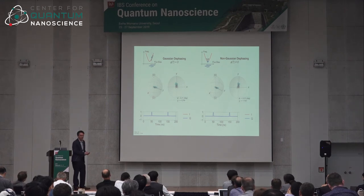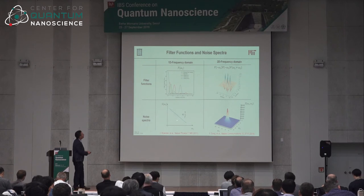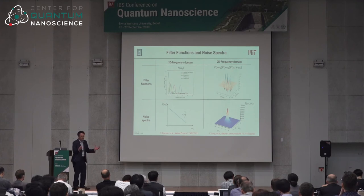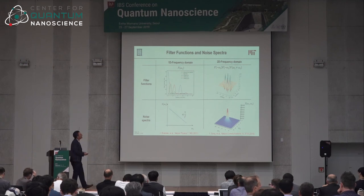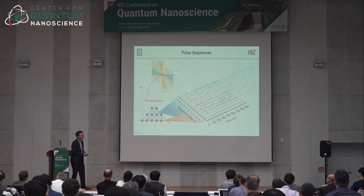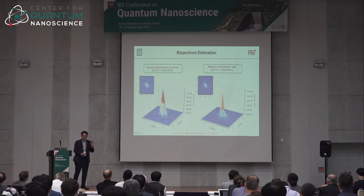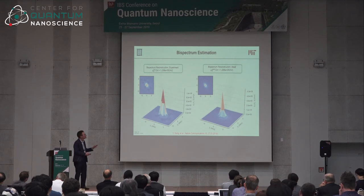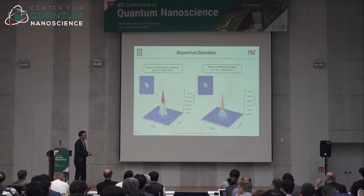Just as one-dimensional filter functions allow us to reconstruct a noise power spectral density, we can create pulse sequences giving a two-dimensional frequency filter function and use that to reconstruct what's called the bispectrum in the frequency domain. With the help of our colleagues Lorenzo Viola's group at Dartmouth, we developed pulse sequences and applied a known engineered noise source to the qubit, showing that the technique can recover the bispectrum. I believe this is one of the first times — if not the first — that non-Gaussian noise has been directly measured in a solid-state circuit.